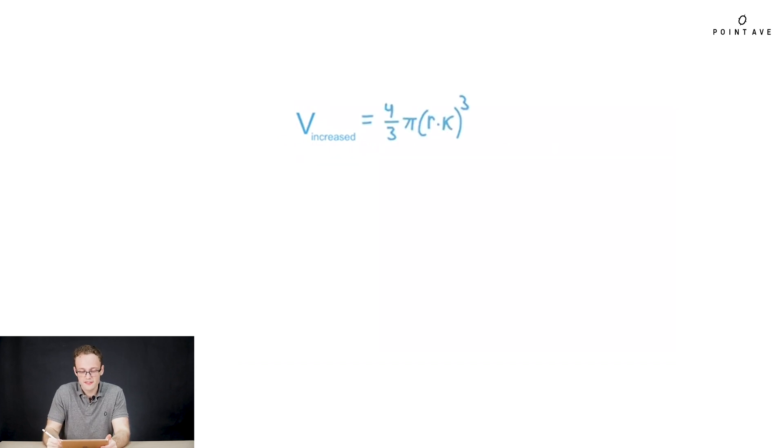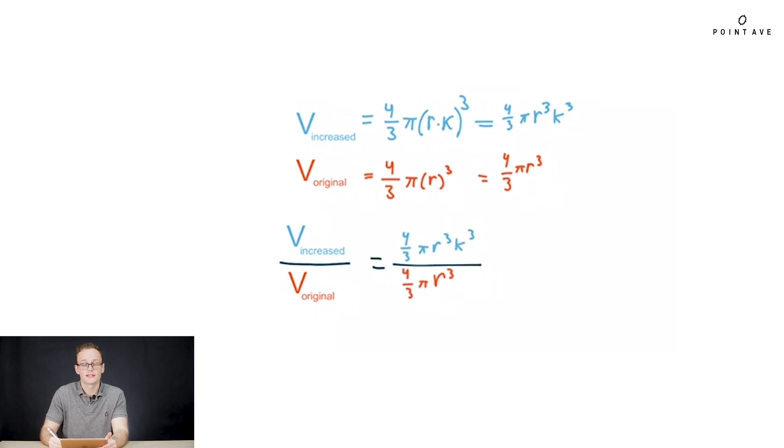Here we see our scale factor we're looking for, the increased volume over the original volume. So finding both of these separately, first the increased volume is 4 thirds pi r cubed, but our r becomes r times k, because we have scaled the radius by k. So evaluating that, we see that our final increased volume is 4 thirds pi r cubed times k cubed. Now, likewise, we evaluate the original volume, which is just 4 thirds pi r cubed, but no k, because we have not scaled it. This is the original volume, original radius. So that's just 4 thirds pi r cubed. And now we can get our scale factor by dividing both of these volumes to get, after doing a lot of cancellation, just k cubed, which is our final answer.